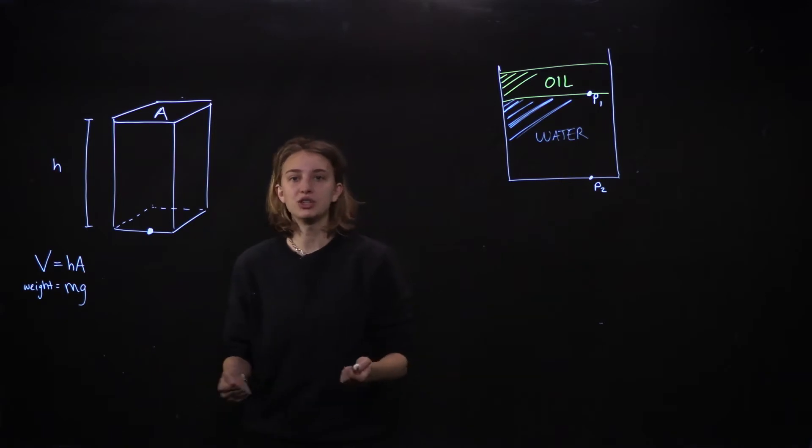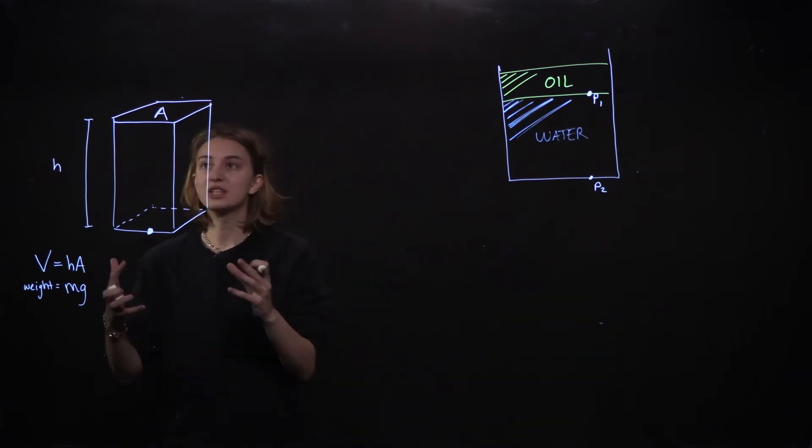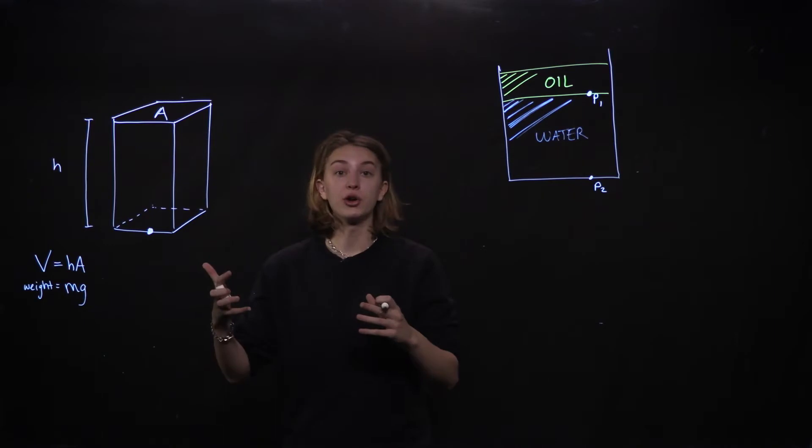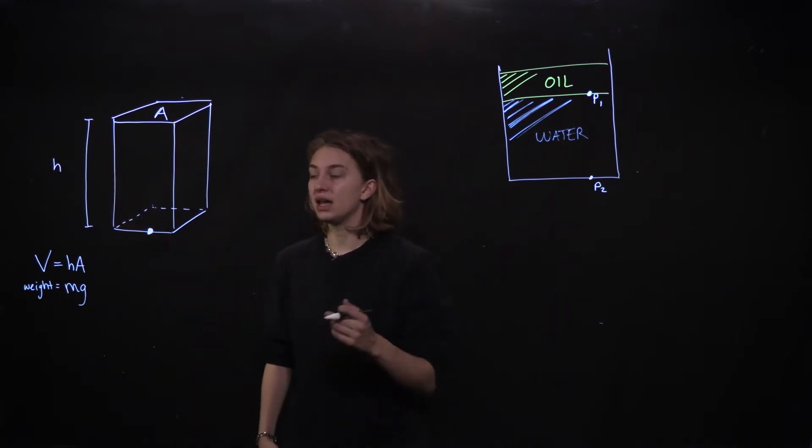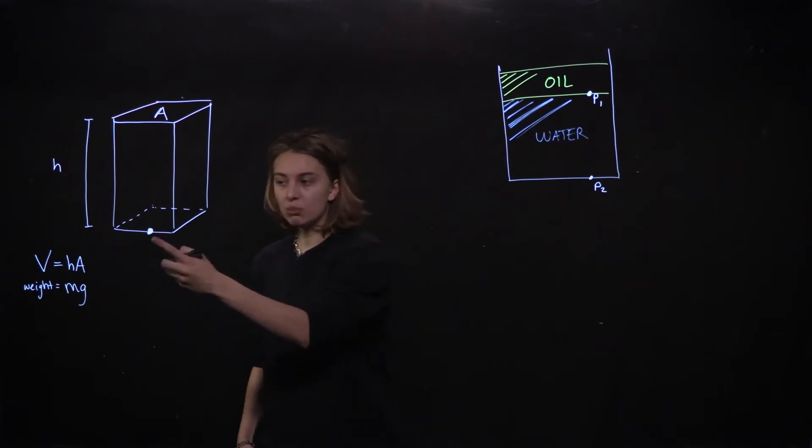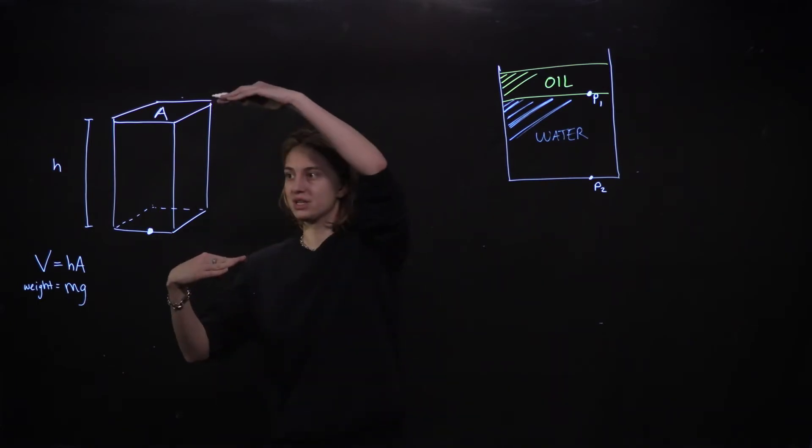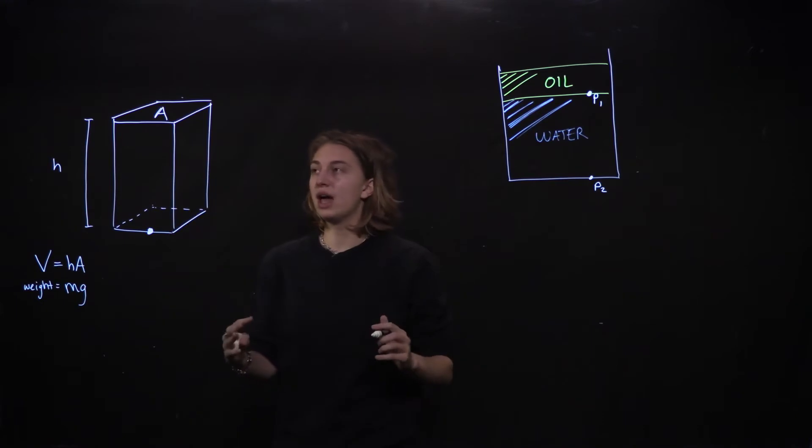First let's just talk about pressure. So we have this column of say water that has a height of H and an area of A. So pressure at some point on the bottom after this height H, and of this column area A.